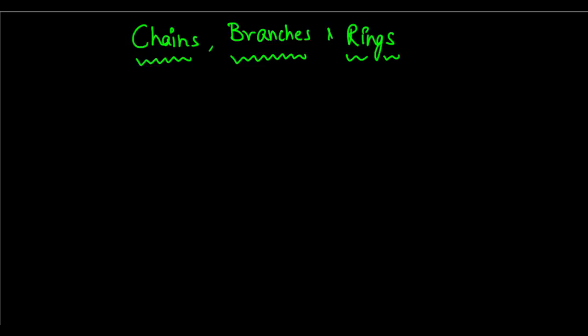Now that we're done with types of hydrocarbons — saturated, unsaturated, alkanes, alkenes — let's have a look at chains, branches, and rings. Carbon, as I've told you before, can form many many types of compounds. It can form chains because of its catenation property, it can form branches, and you can have rings as well.